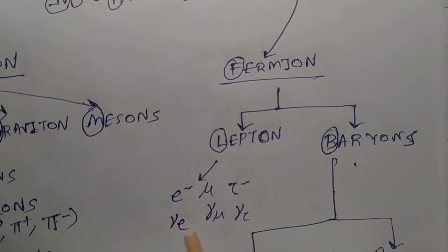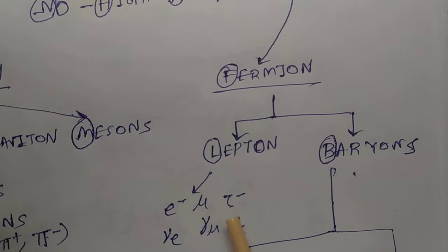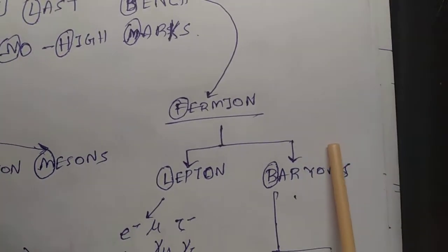They are electron, e-neutrino, muon, mu-neutrino, tau, tau-neutrino. And what is the classification of baryons?